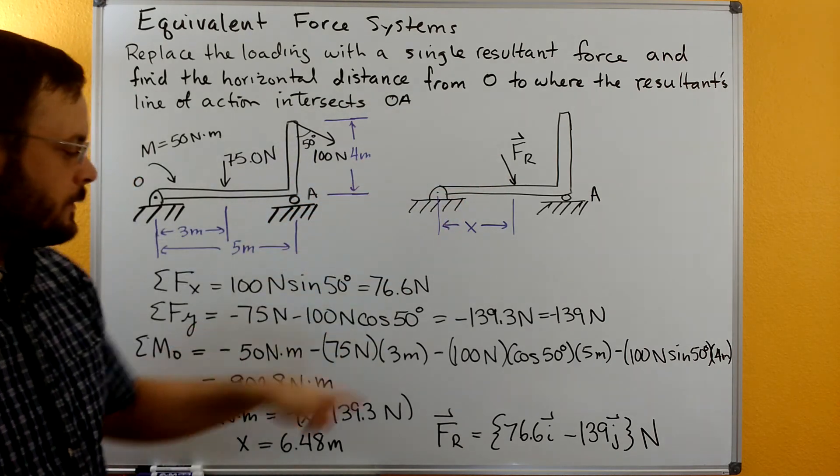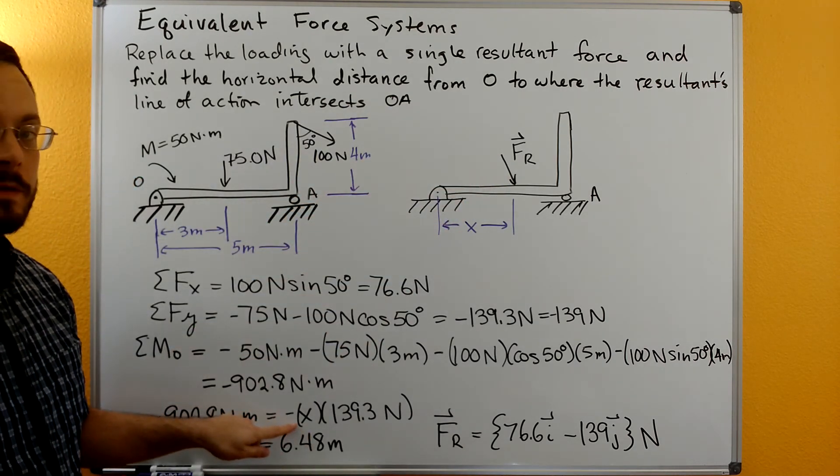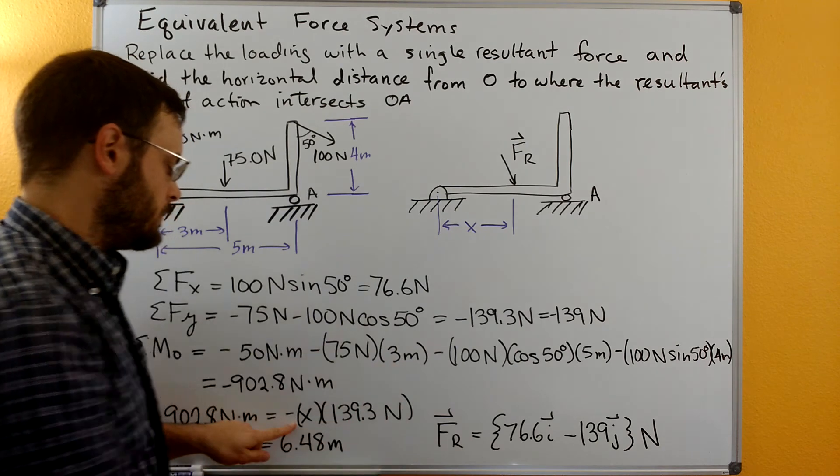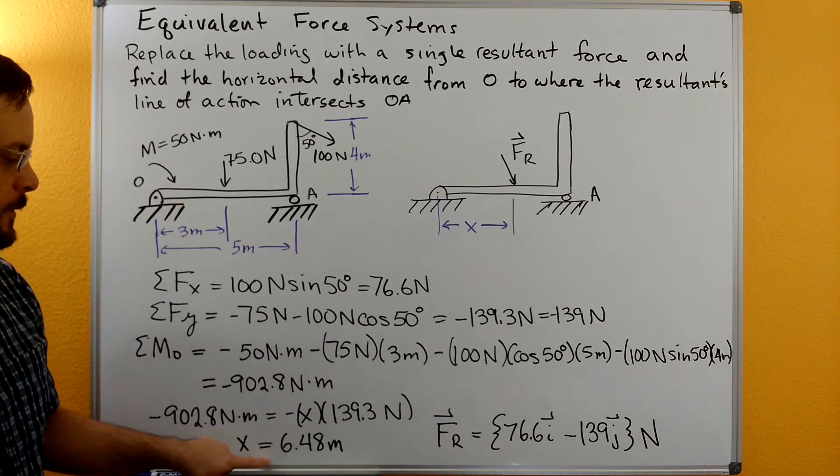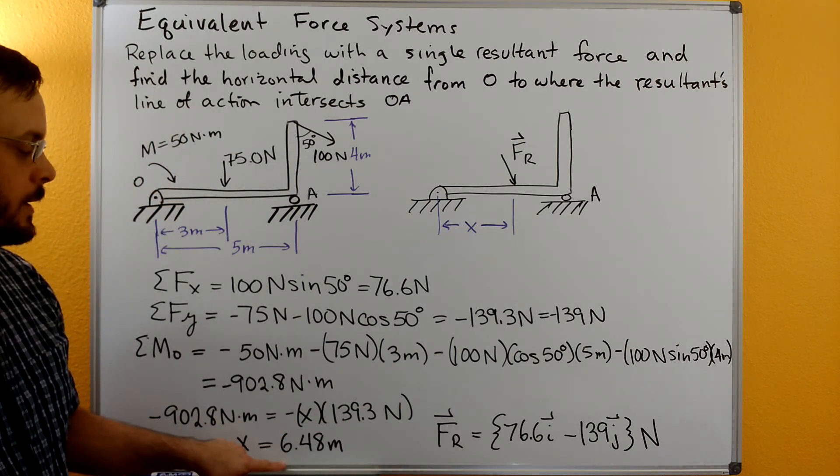So the Y component of FR times the X distance of the Y component back over to O. Then we can solve for X and we get 6.48 meters.